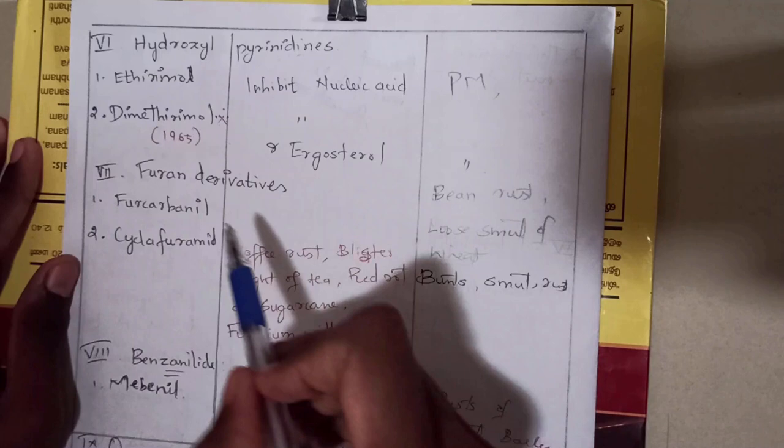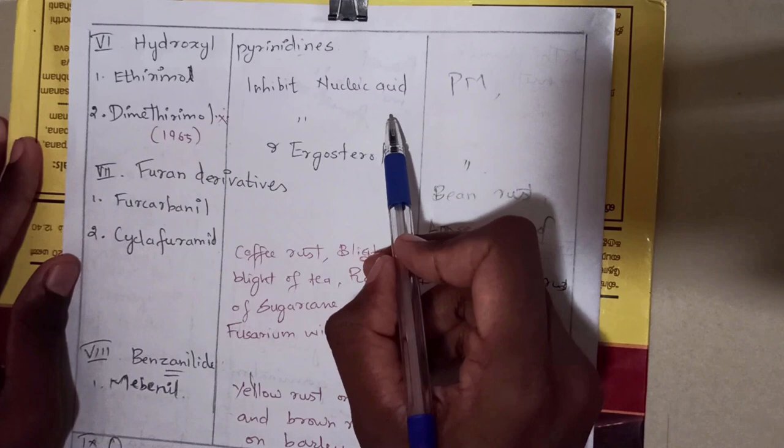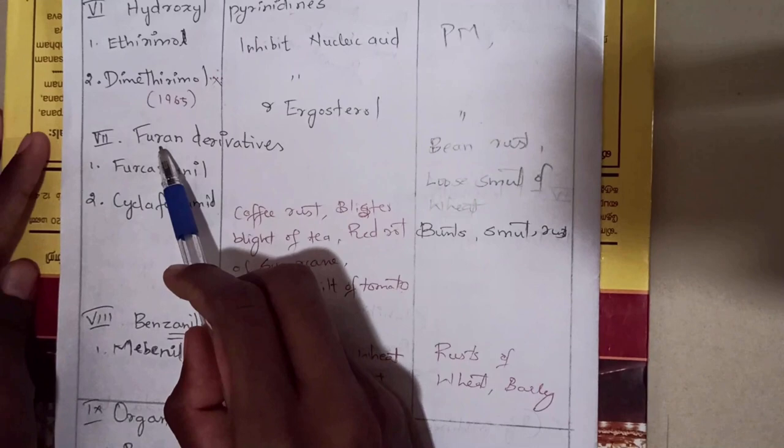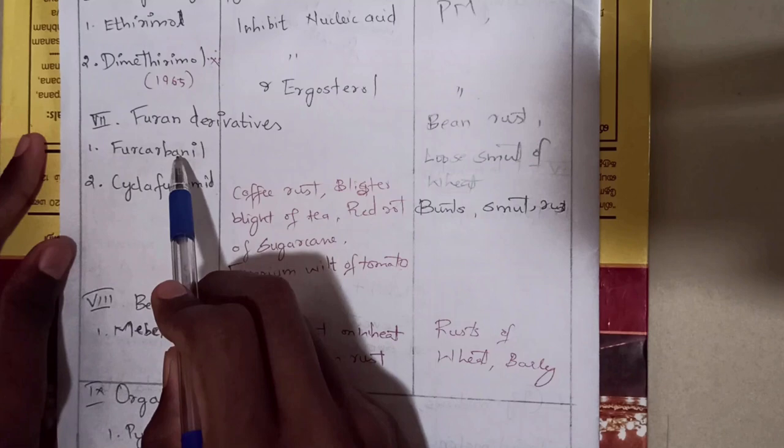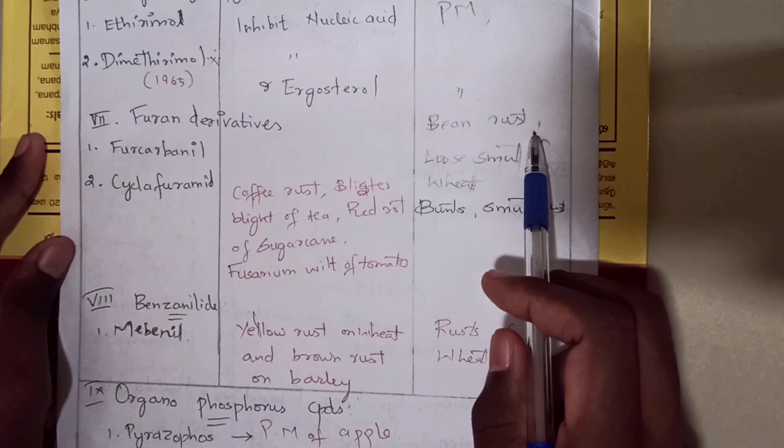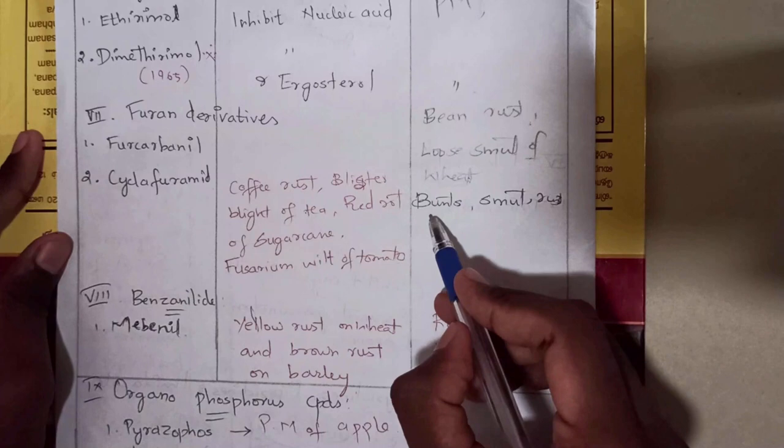The seventh group is furan derivatives. The first compound is furcarbonyl, used against loose smut of wheat and bean rust. The second compound is cyclofuramate, used against bunts, smut, rust, and also specifically for coffee rust, distal blight of wheat, red rot of sugarcane, and fusarium wilt of tomato.